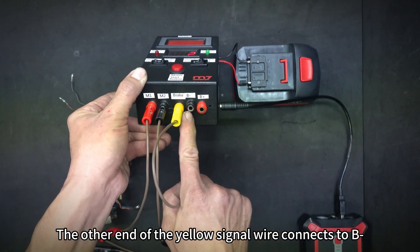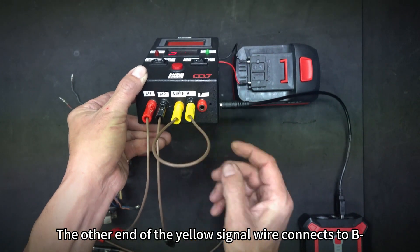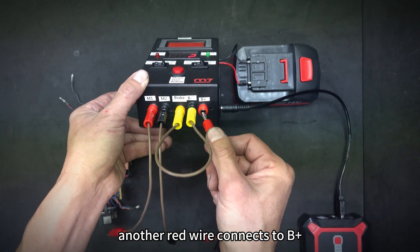The other end of the yellow signal wire connects to B-, and another red wire connects to B+.